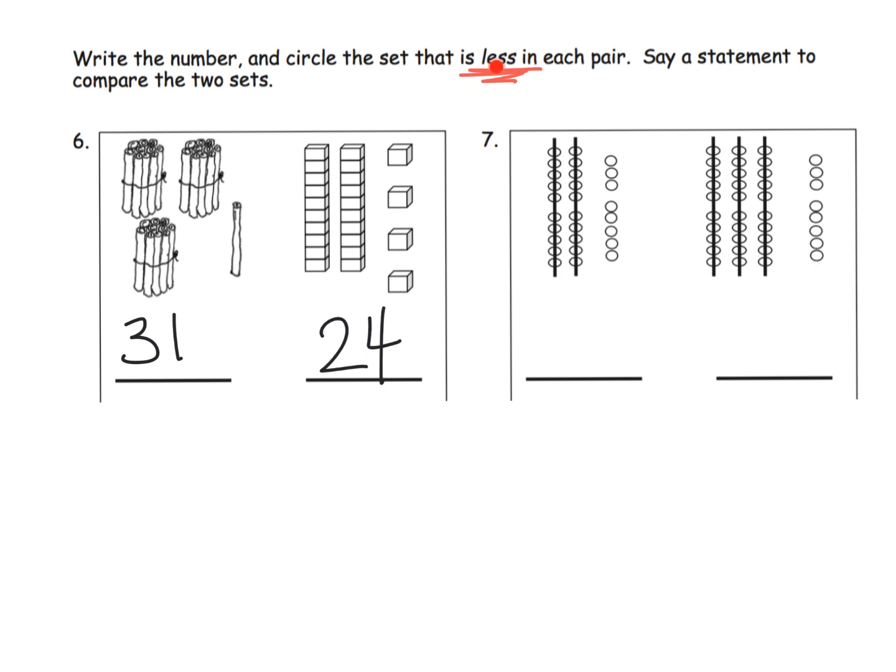Keeping in our reading comprehension that we want to circle the number that is less, we're going to circle the 24 because two tens is less than three tens, and automatically that makes this number less than this number. I want to call out over here, this is the quick tens. I love the quick tens. This is a super important way to notate numbers, especially later when our students begin to add numbers in the teens.